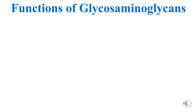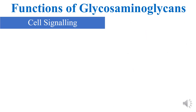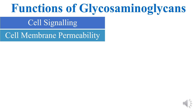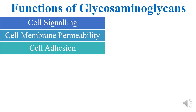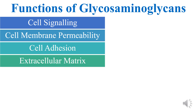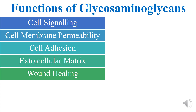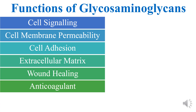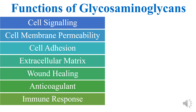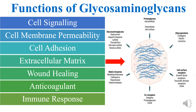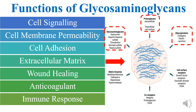The functions of glycosaminoglycans include cell signaling, cell membrane permeability, cell adhesion, extracellular matrix formation, wound healing, anticoagulant activity, and immune response. The extracellular matrix is composed of various molecules including glycosaminoglycans, proteoglycans, and glycoproteins.